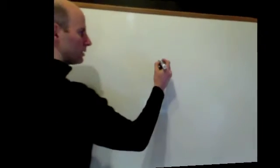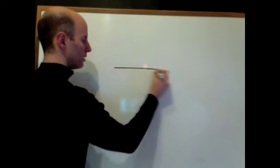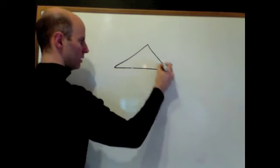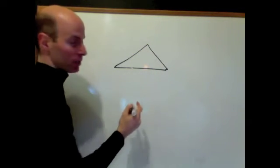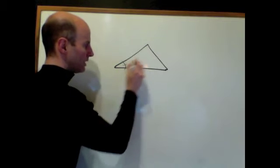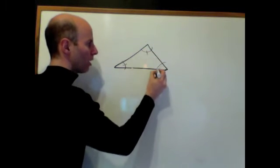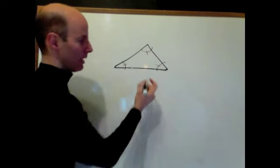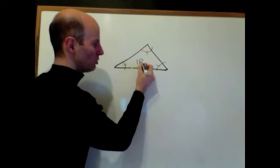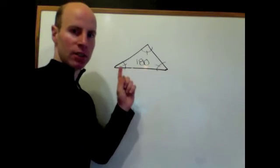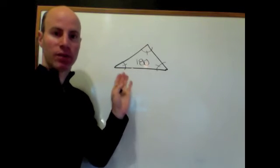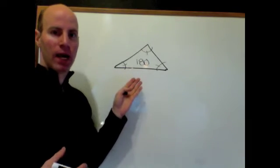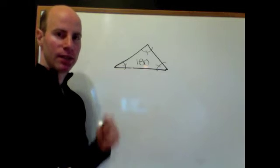The first one goes like this. The sum of the angles inside a triangle, the sum of those interior angles, whatever they are, whatever the combination is, they always add up to 180 degrees.